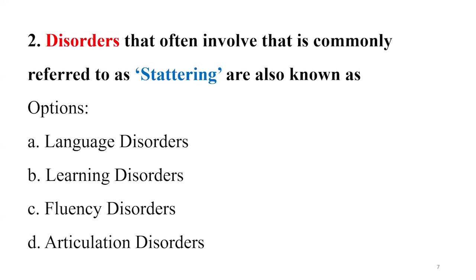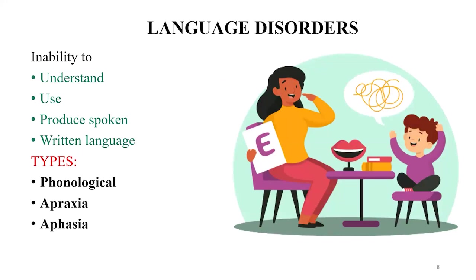Language disorder involves difficulty in understanding, using, or writing language. It has three types: phonological — where a child may say 'boo' for 'book' or 'pee' for 'pig'; apraxia — where a child cannot express emotions in words, saying 'chicken' instead of 'kitchen'; and aphasia — where they express themselves using just two words, like 'walk dog' instead of 'I will walk the dog.'